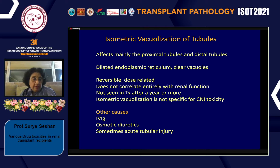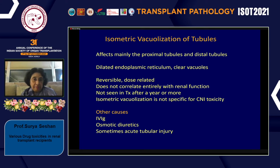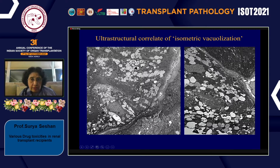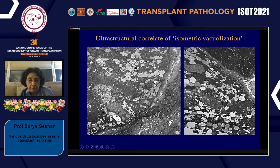This finding can be non-specific if other causes are not considered, particularly in the transplant setting — for example, patients who received IVIG, those on osmotic diuretics, or with severe acute tubular injury. An electron microscopy picture shows isometric vacuolization more closely: the dark areas represent mitochondria separated by clear vacuoles of dilated endoplasmic reticulum, with the brush border often preserved. Reversibility is frequently possible when identified early.